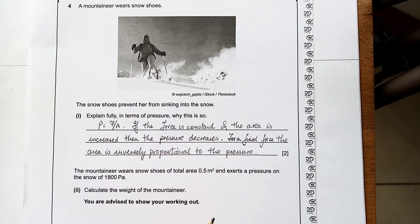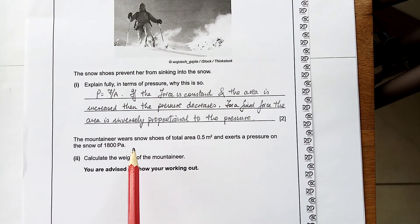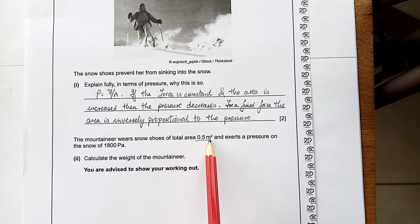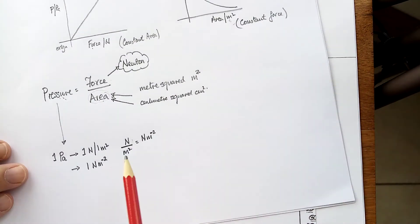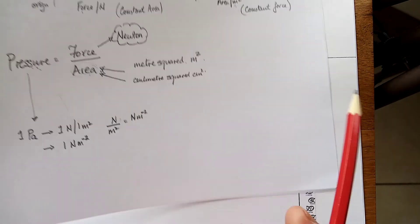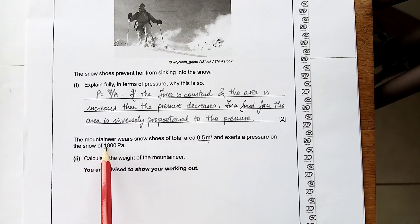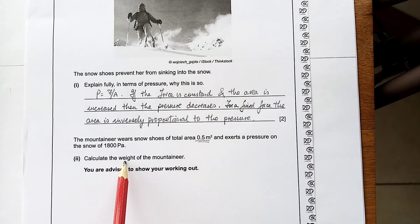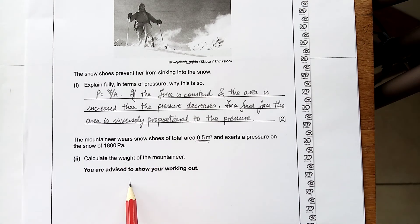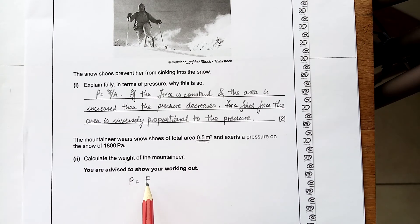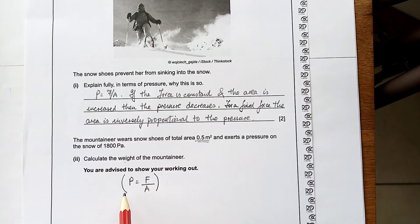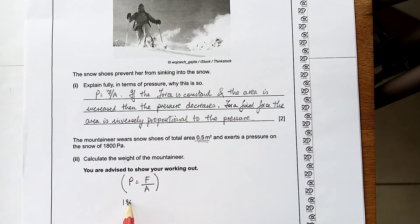Now, do the next question. The mountaineer wears snowshoes, a total area of that. So, that's alright. Because, I look at my notes, and I have learned this. I know the area is in square meters. And it exerts a pressure of 1,800 pascals. Calculate the weight. Now, remember I said weight and force are the same thing. So, pressure equals force over area. Put in the bits and pieces. 1,800 is equal to the force over 0.5.